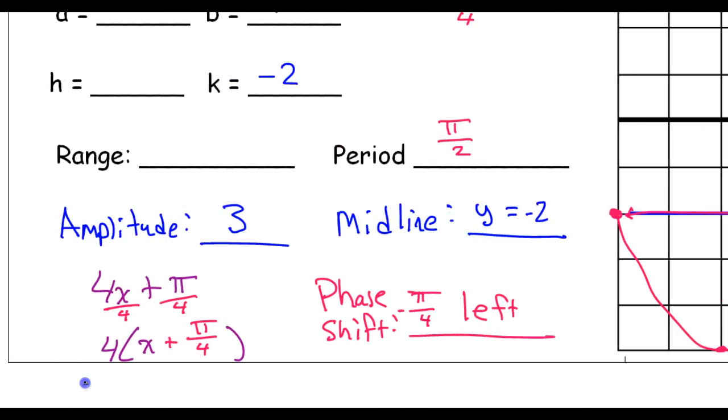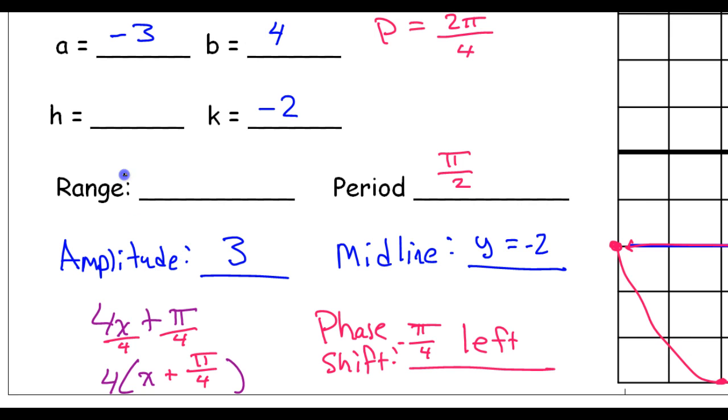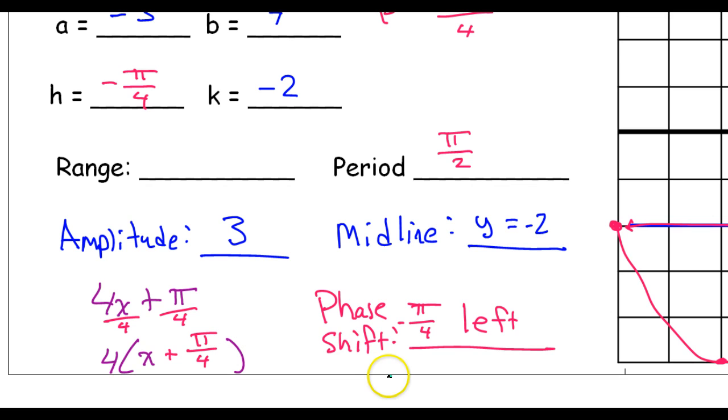That h value is negative π over 4. That's your phase shift is your h value. So, don't state your h value until you pull out any b and divide by it.